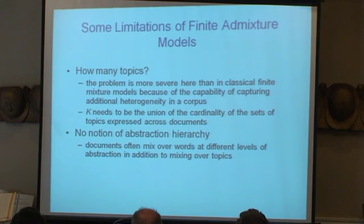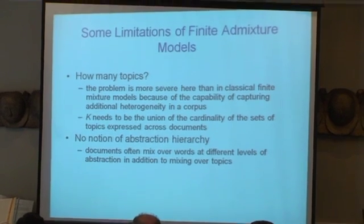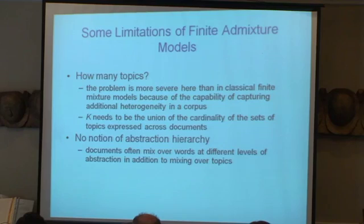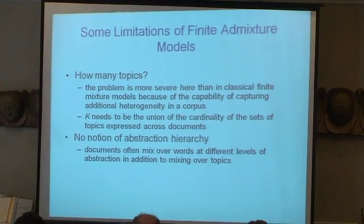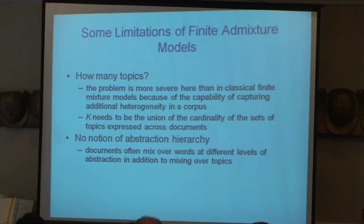So that's great. But there are some limitations we've been working on in the last 15 years. First: how many topics? It's a really hard problem, and it's more severe than in simple mixture models because each document has its own number of topics, so you want to take a union over the entire set — that's hard to think about as a model selection problem. Second problem: no notion of abstraction hierarchy. You generate a topic — it's just a distribution of words, no hierarchy, no structure. Not good.